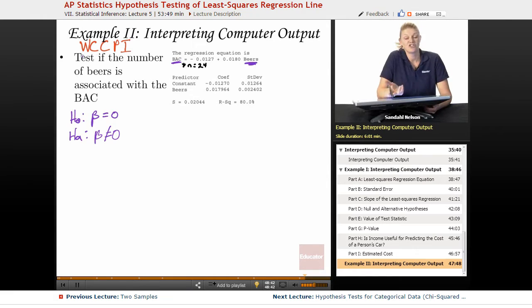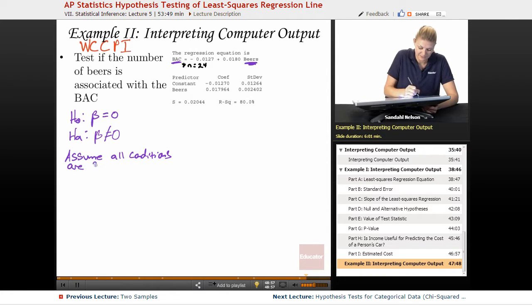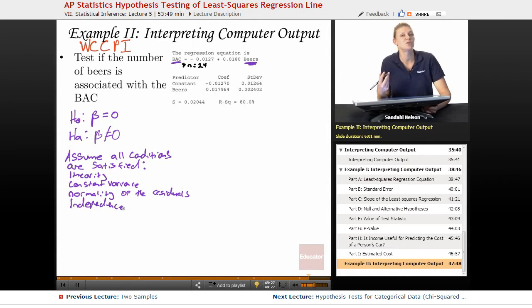So for conditions, we can't check them. We did not have the raw data. They just gave us the output. So we're going to have to say that we assume all conditions are satisfied. And then if this was an AP exam, you want to write them out: linearity, constant variance, normality of the residuals, and independence. So we're assuming they're all satisfied and we're listing what assumptions we've made.